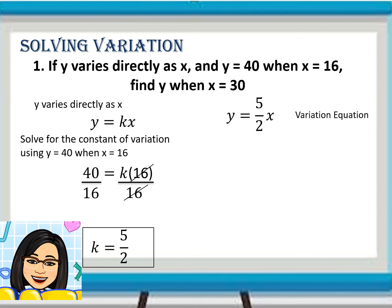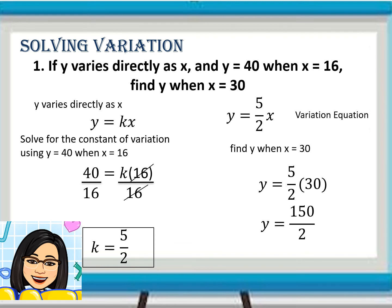We can now find Y when X equals 30 by substitution. Y is equal to 5/2 times 30, which is equal to 150 over 2. So, Y is equal to 75.